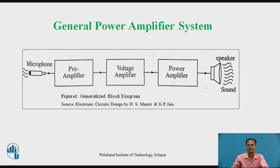The output of the small signal voltage amplifier is given to the input of the power amplifier. A power amplifier increases voltage level as well as current level of the input signal, and with high output driving capability, the high power output signal is given to the output transducer — for example, a speaker — which converts electrical energy into sound energy. The power amplifier is basically a power converter. It converts DC power from the DC power supply into output AC signal power delivered to the output load under the control of the input AC signal.